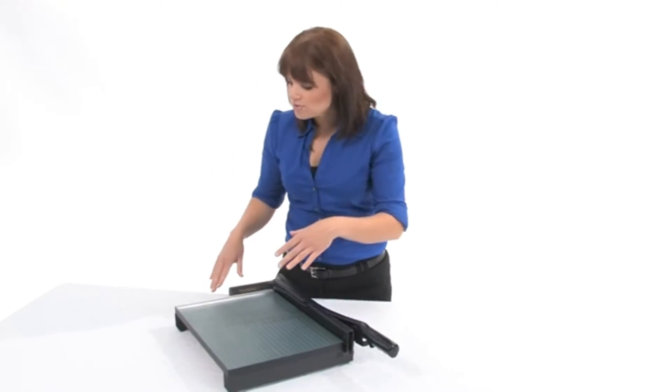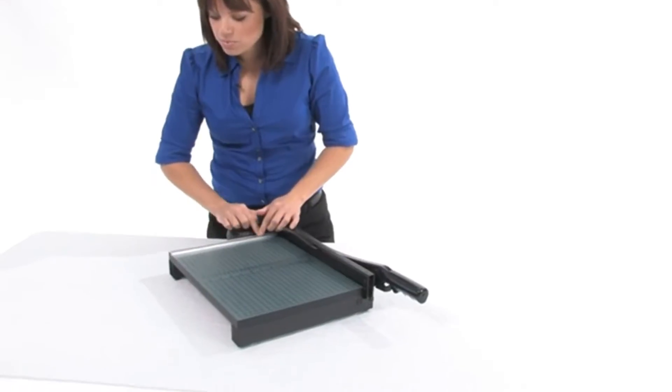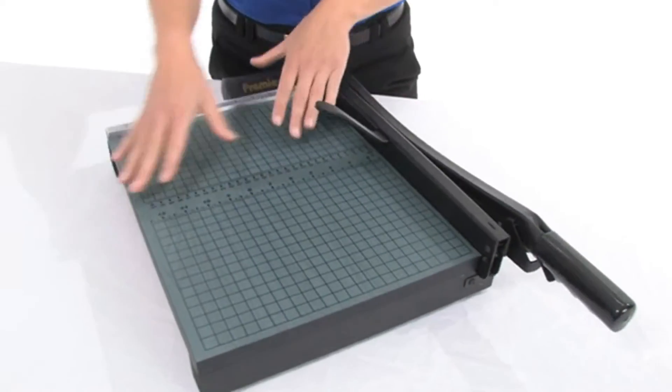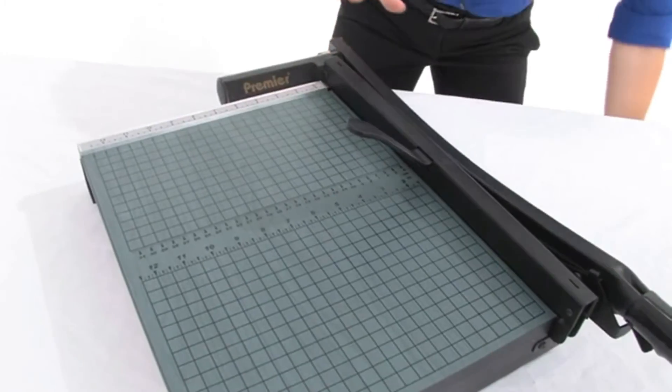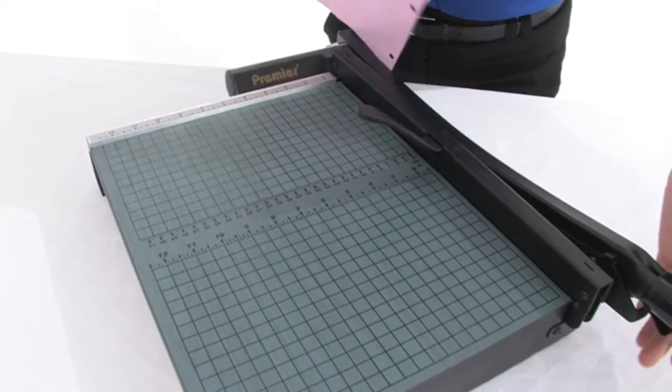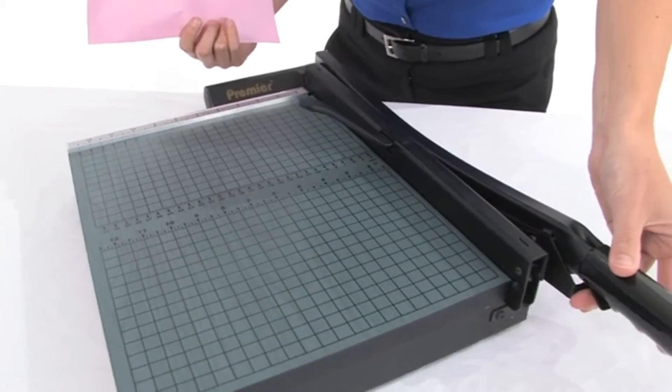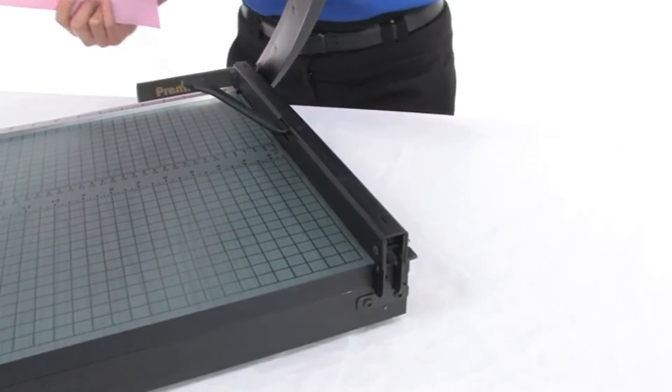Now if you come in close here, I'm going to show you we've got some pre-printed guides. We've got inches, we've got metrics, so when you need to line up your paper you're all set. Come on over here and have a look at this safety feature, this latch. We just pull up the latch that releases the blade.